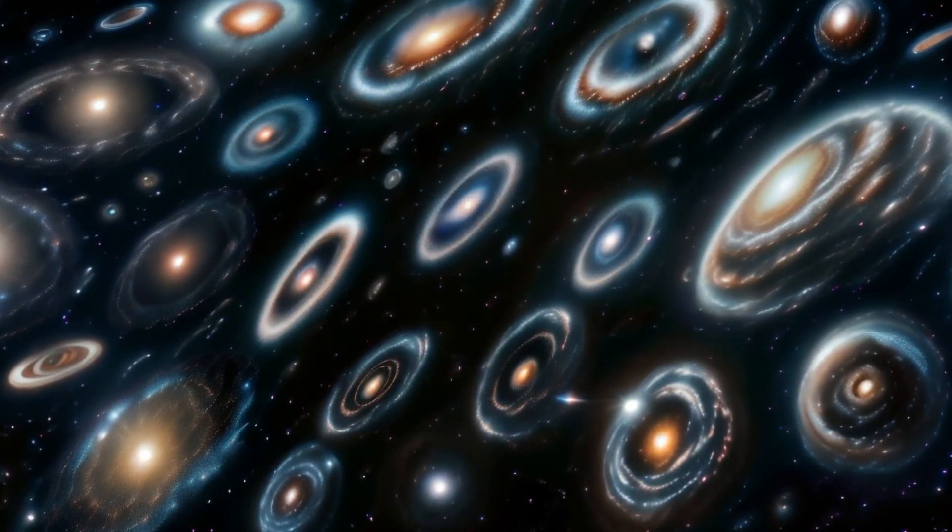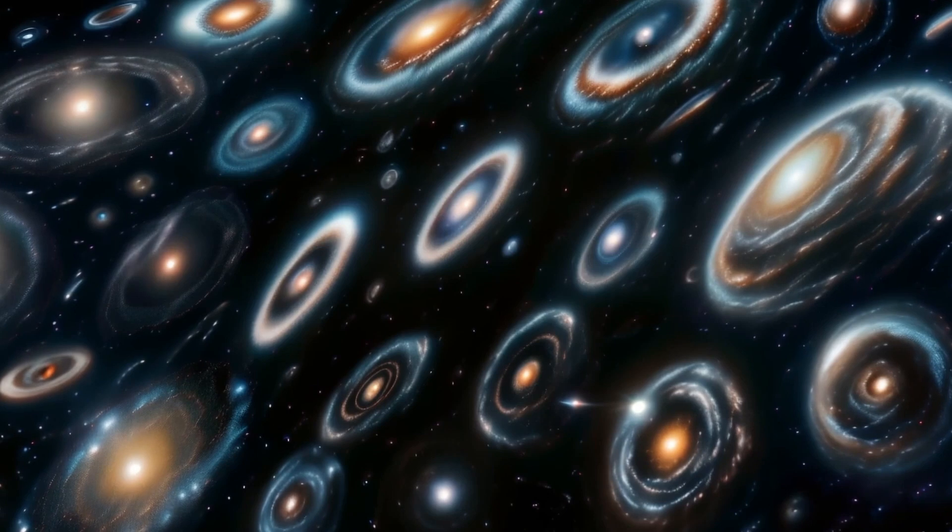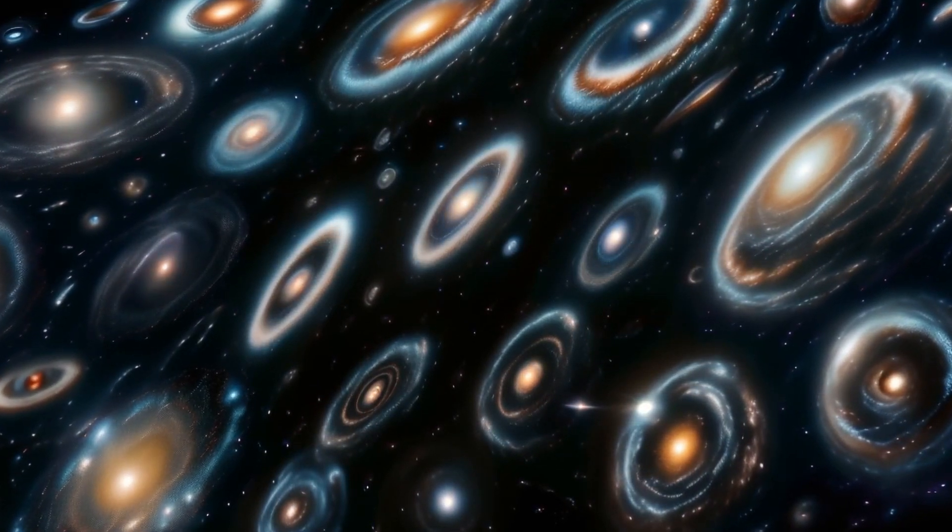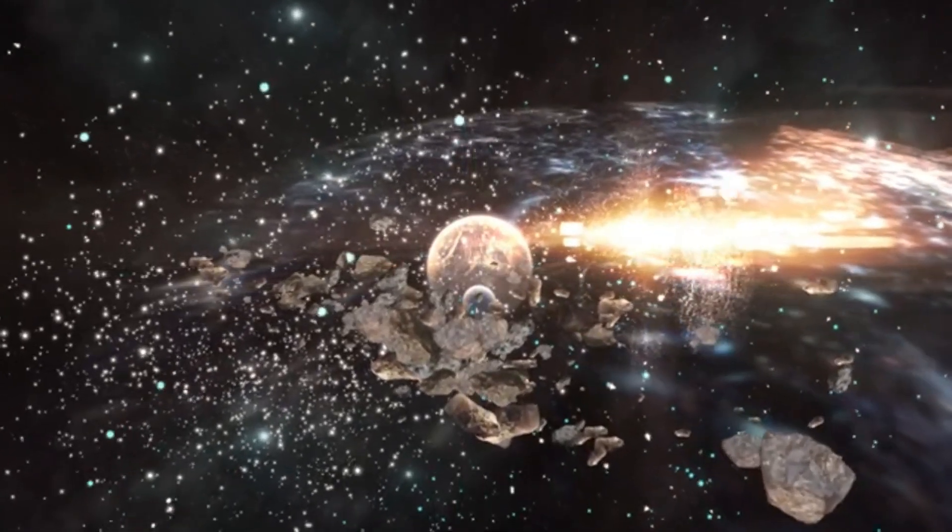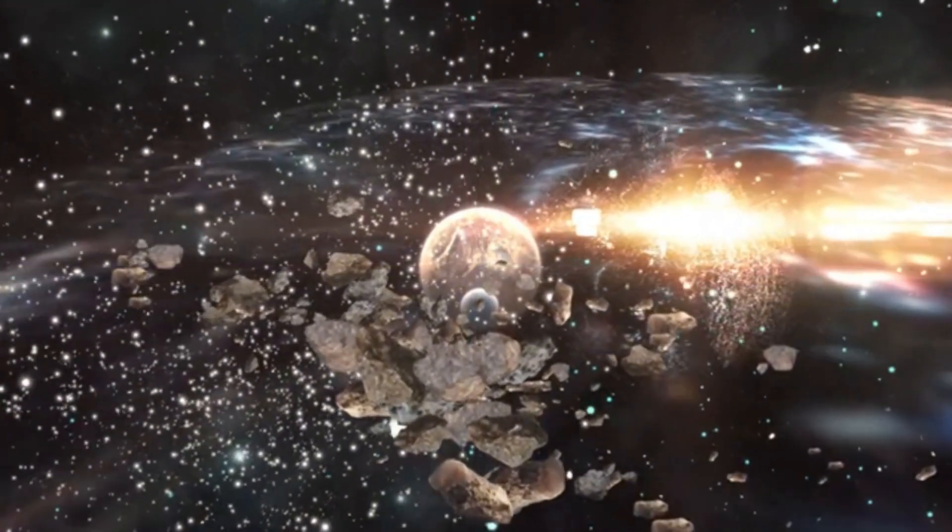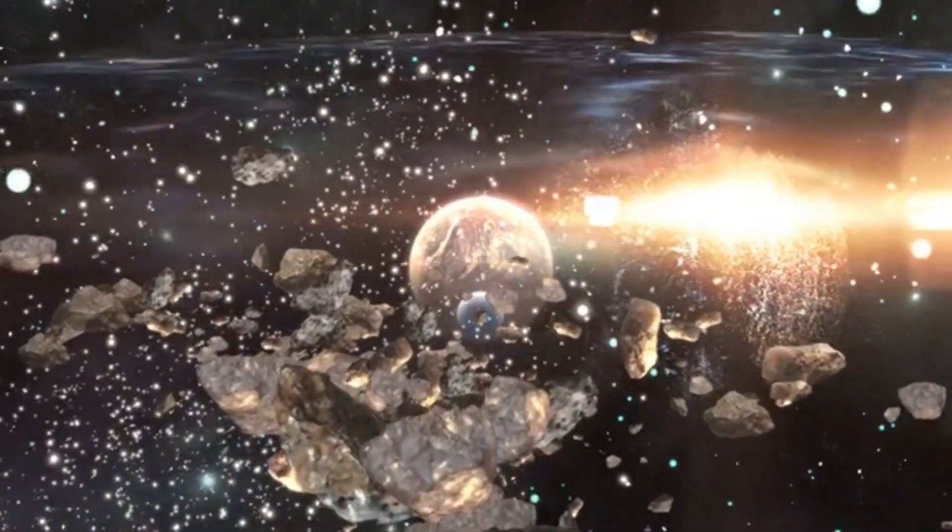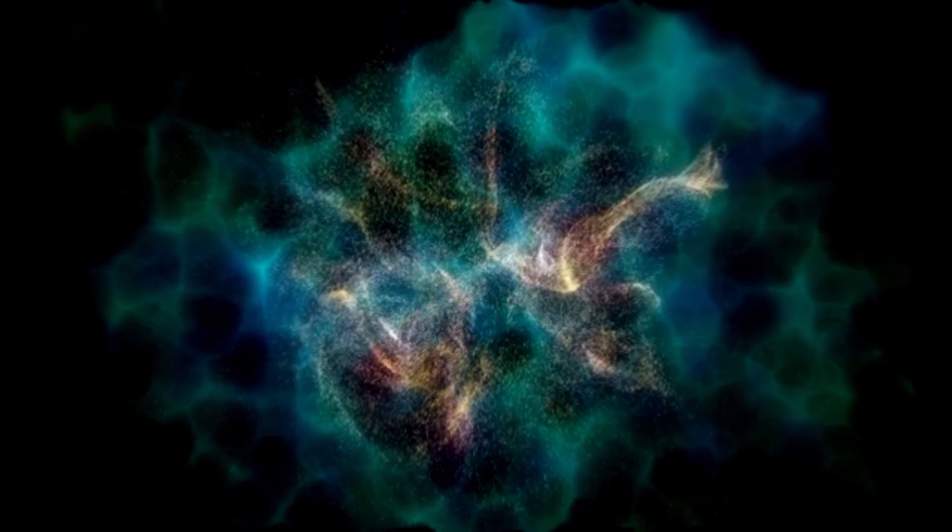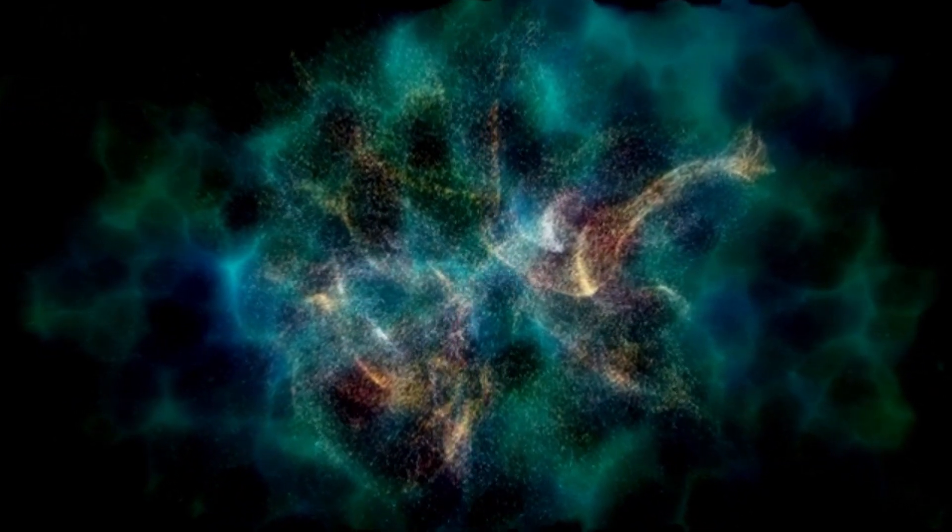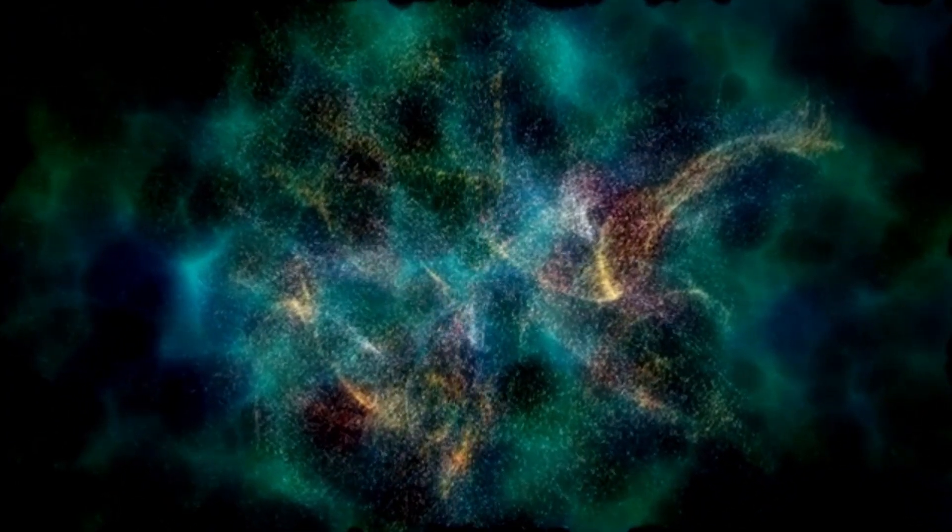This colossal size not only illustrates the physical grandeur of Betelgeuse, but also indicates its stage in the stellar life cycle. As a red supergiant, Betelgeuse is nearing the end of its life, expanding and cooling after exhausting the hydrogen in its core and fusing helium.